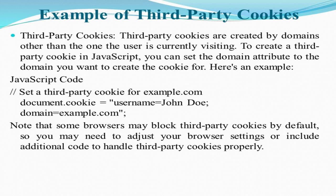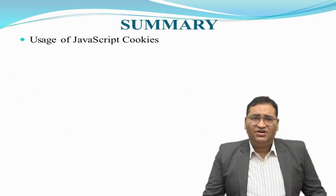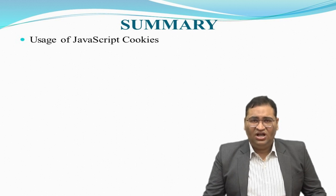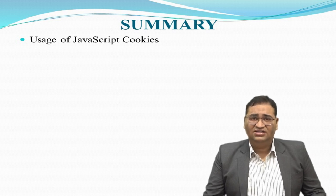So in summary, we have seen various kinds of cookies, how these cookies are useful, and the three types of cookies: the session cookie, the persistent cookie, and the third-party cookie — how these are useful in day-to-day life and how they are being used by various website providers and domain names. Thank you very much for your time, dear students, and in the next session you are going to see the advances in this particular JavaScript field. Thank you very much.